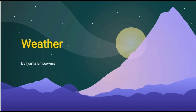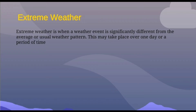Let's get into it. First I'm going to define what extreme weather is. This is when a weather event is significantly different from the average or usual weather pattern. This may take place over one day or a period of time. For example, with rainfall you get some rain and some winds normally, but then you have a hurricane, which has tremendously more rainfall and heavier, faster winds — that is an example of extreme weather, something more than the norm.